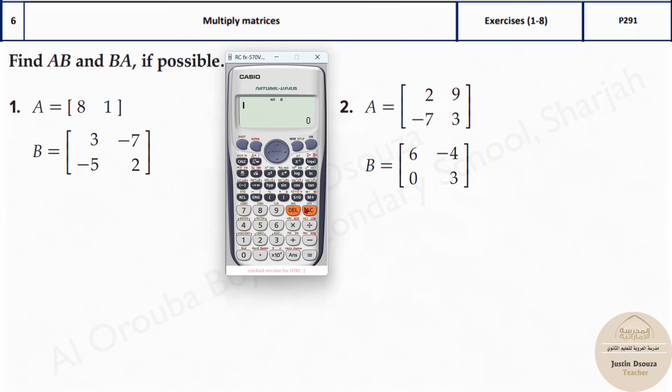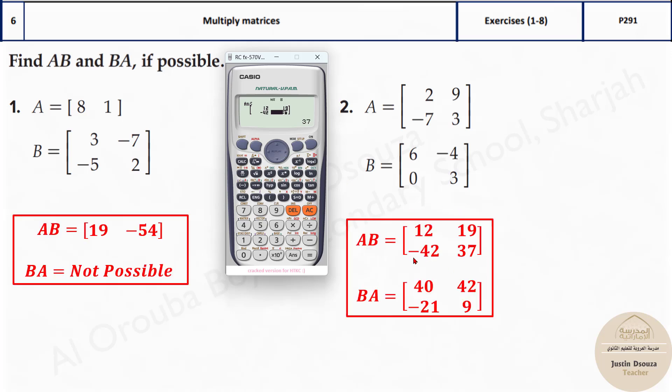Now both the matrices are saved and all you need to do is multiply. You have to multiply AB and BA if possible. So let's press shift 4 and type 3, that is matrix A, multiply by multiplication symbol, and now again matrix B, that is shift 4 and option 4. Press equal to, you get the answers: 12, 19, minus 42, and 37.